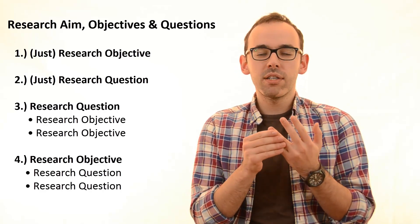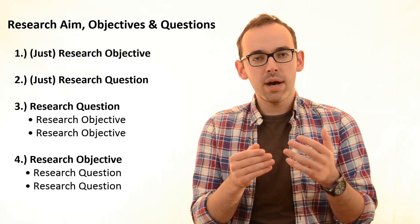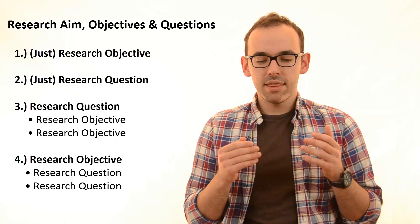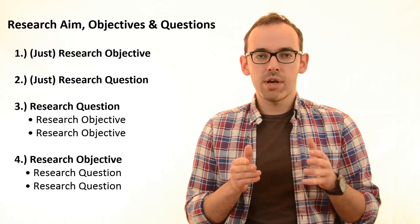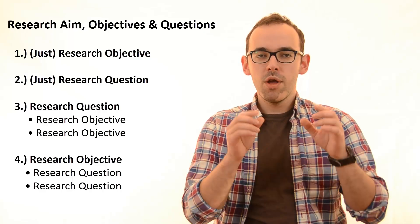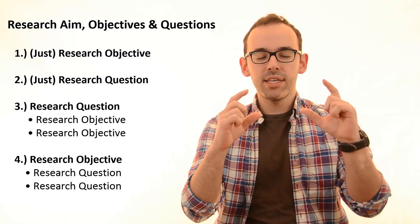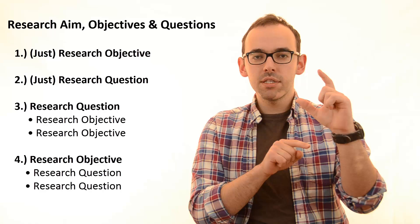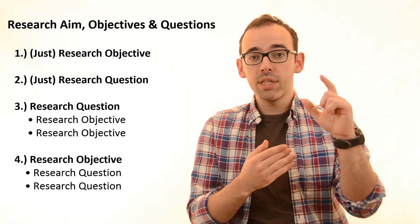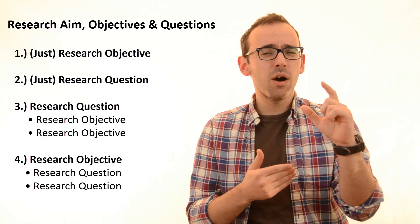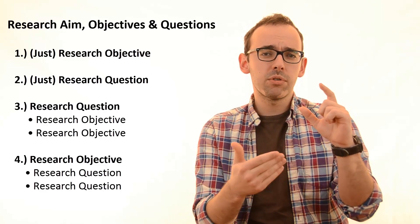What is more common are the other two formats when you are combining research questions and research objectives. It's combined in a very specific way. You either have one research question that will say where your research is heading, with several research objectives below it that will, in a bit more detailed way, describe how you aim to achieve this target.